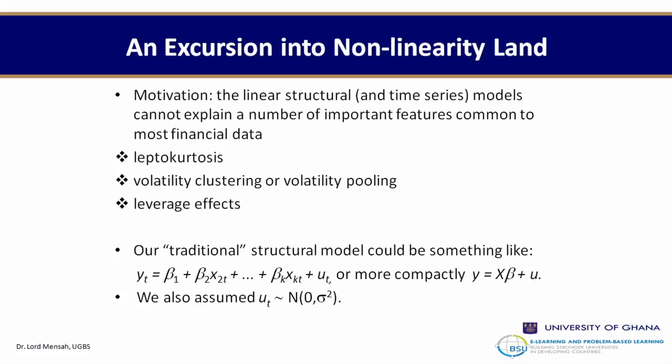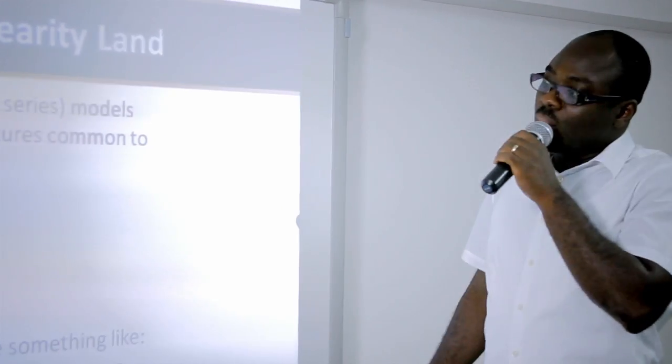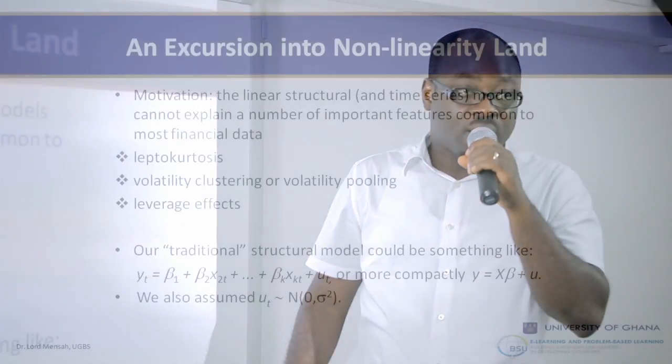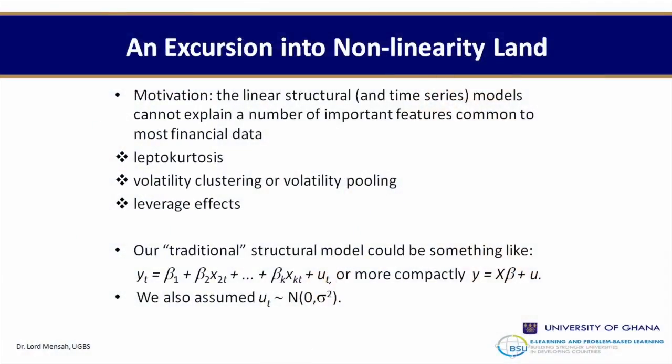The characteristics of stochastic processes: linear structural models cannot explain a number of important features common to financial data. If the data has a fat tail — leptokurtosis — it will be difficult to capture the dynamics. We also have volatility clustering or volatility pooling, where smaller shocks are followed by smaller shocks and bigger shocks follow bigger ones. There can also be a leverage effect. Traditional structural models assume mu is normally distributed with expectation zero and constant variance.